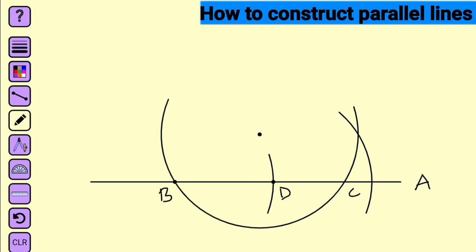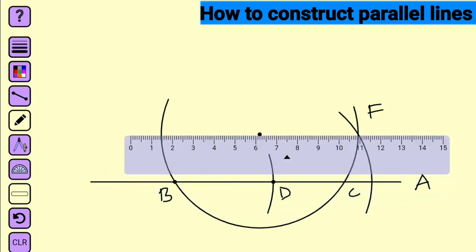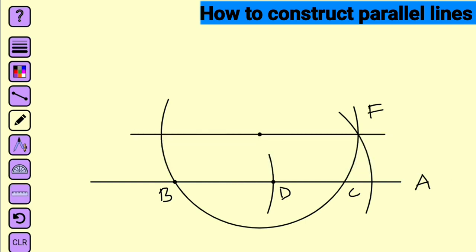Call that intersection F. Now connect point F and the initial position of your compass pointer — where you placed it to draw the semi-circle — using your ruler. Let us call this line G. Line G and line A are said to be parallel to each other. This is exactly how to construct parallel lines. In our next class, we are going to look at how to bisect a line segment into two equal parts. Thank you for watching, and do have a nice day.